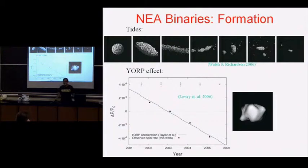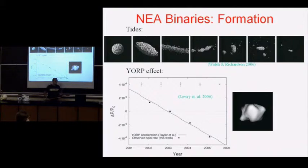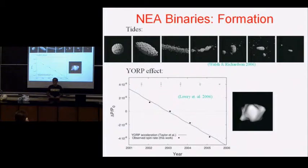We're not really sure how these form. About 15% of near-Earth asteroids are binaries — a much higher percentage than the fraction of binaries among main belt asteroids. It's thought that the formation of these binaries occurs by two processes which are different from those affecting the bigger, more distant main belt asteroids.